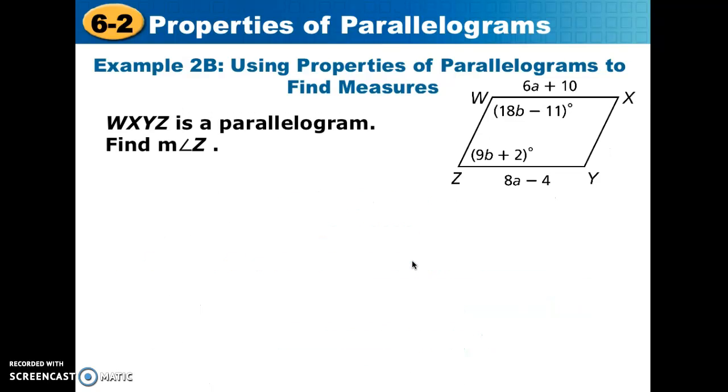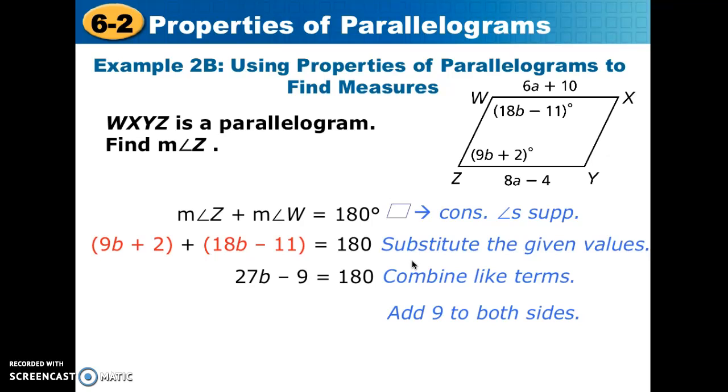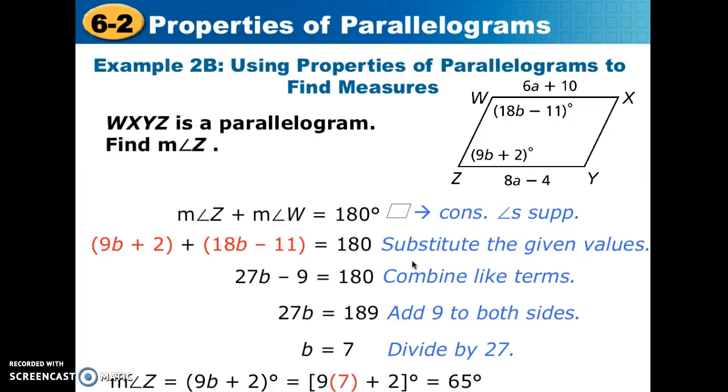Now, we're on the same parallelogram. This time, what we're trying to find is the measurement of angle Z. So we notice that angle Z is, we have an expression for it, 9B plus 2, and we see that we have the measurement for a consecutive angle, angle W. We know that consecutive angles in a parallelogram are going to be supplementary, meaning we can set them up in an equation to add them to each other, and then equal 180 degrees. And that's going to allow us to solve for B. Once we solve for B, we're going to plug it back into the expression for angle Z, and that's going to give us 65 degrees. So I know you've got to go through the math, pause the video so that you can plug everything in, and copy it down into your notes so that you'll be ready for the now you try in your notes.